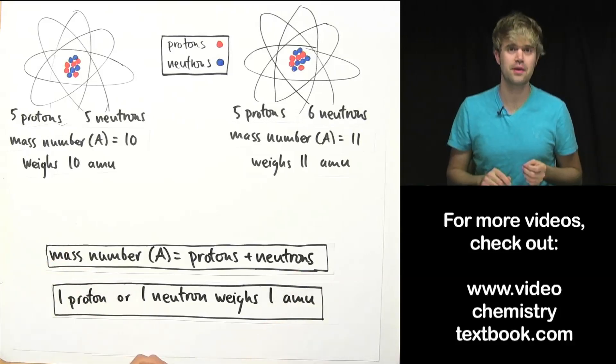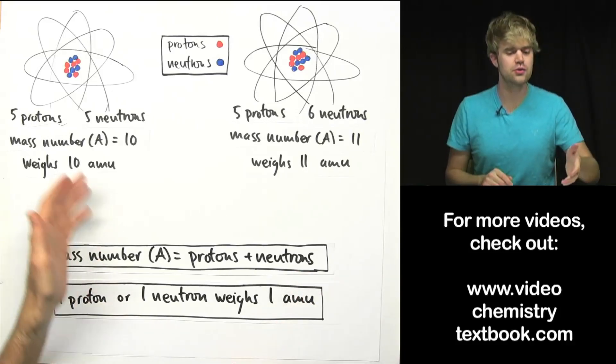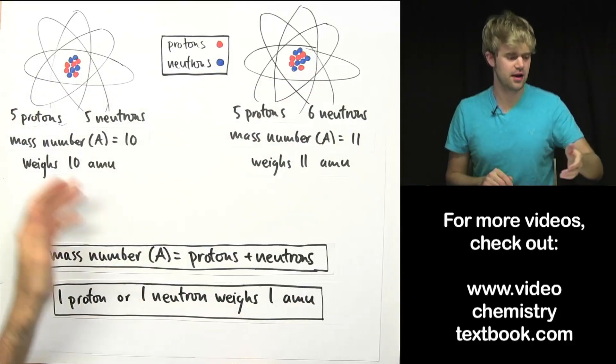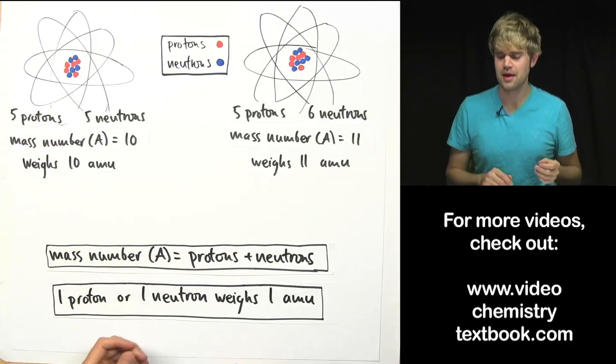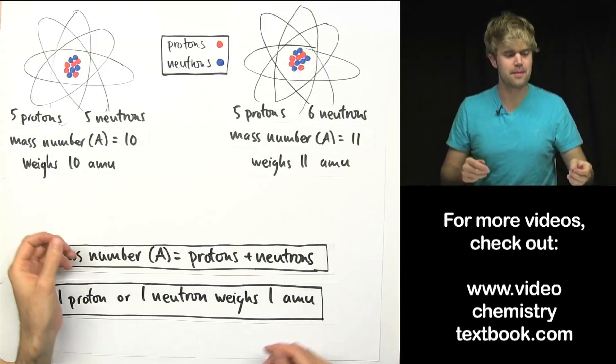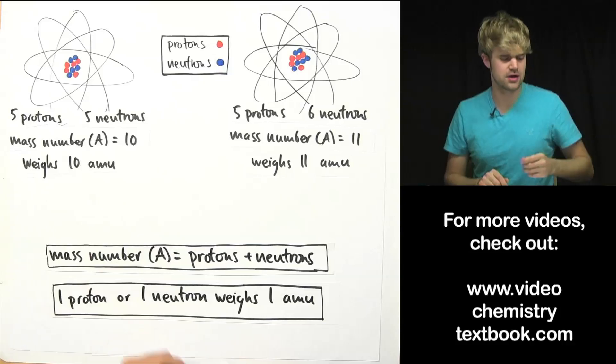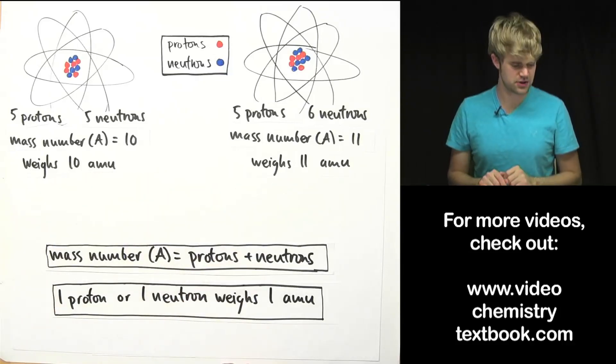Okay so that's mass number. Mass number is something that we can use to describe an atom, its protons plus neutrons and it tells us a little bit about how much that atom weighs in atomic mass units.